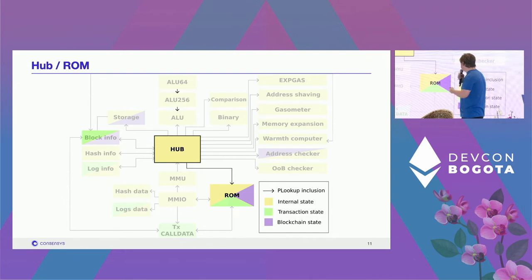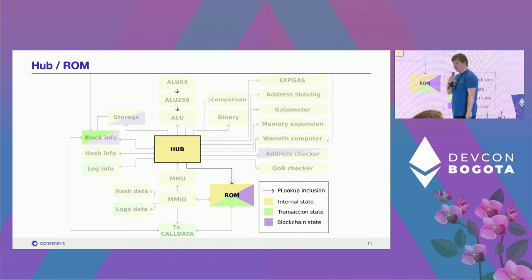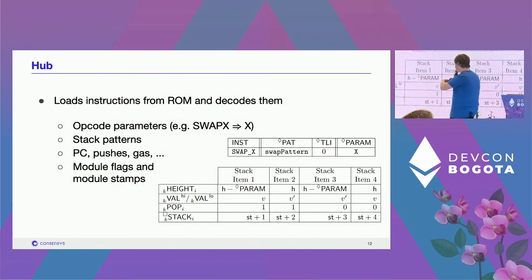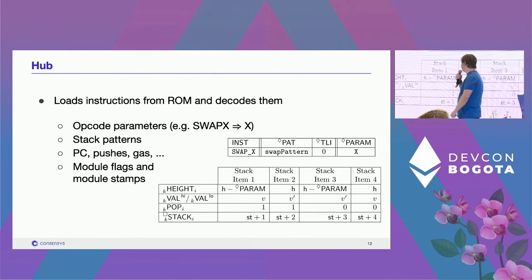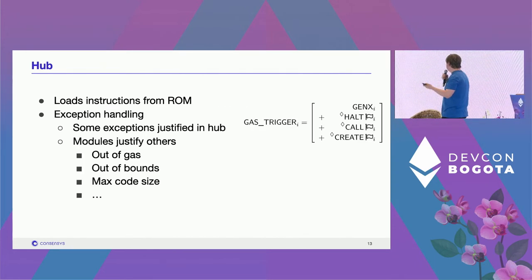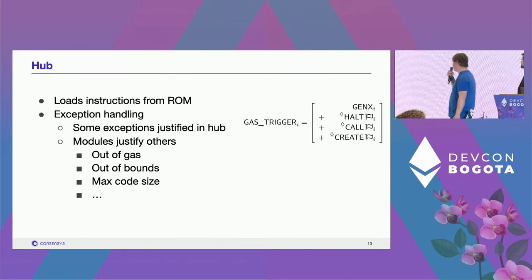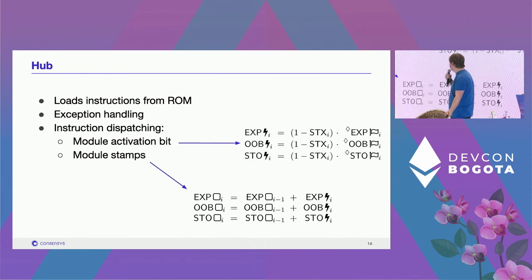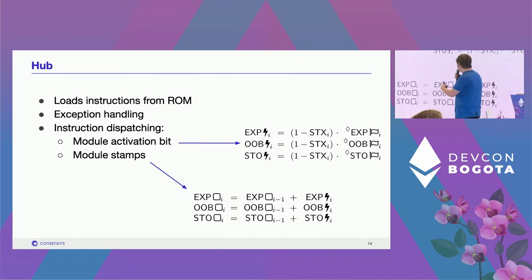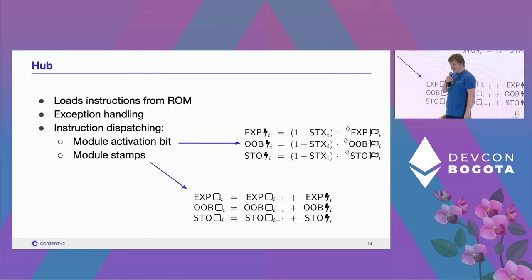Let's zoom in on the hub, our stack and call stack. It gets its instruction from the ROM and dispatches it wherever it makes sense. Once it has an instruction, it does a preliminary decomposition — extracts hard-coded parameters, decides how to interact with the stack, how much data to excavate, where to put it in the trace. It raises module flags. Then, before dispatching the instruction, it deals with potential exceptions — some it can detect, others it imports from other modules.